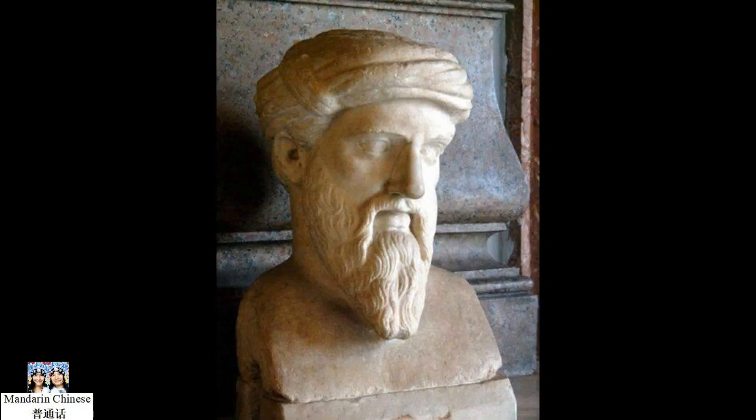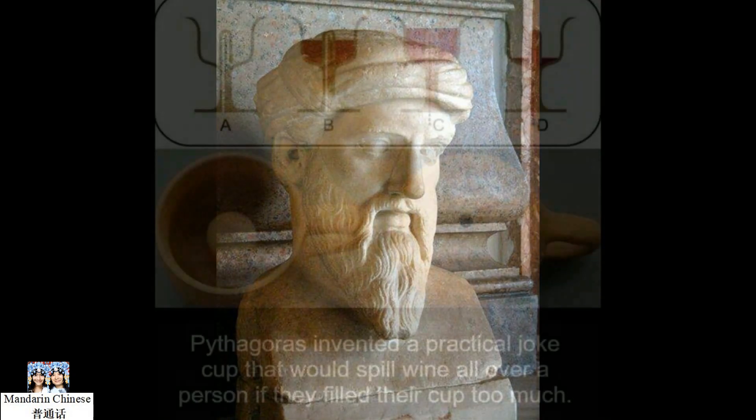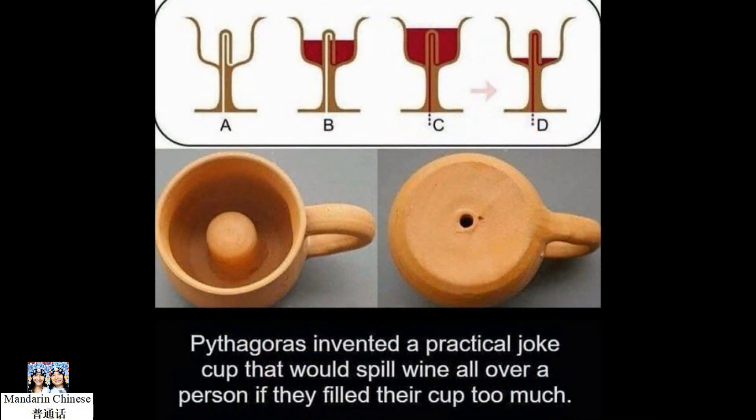Pythagoras of Samos was an ancient Greek philosopher and mathematician. He invented a practical joke cup that would spill wine all over a person if they filled their cup too much.